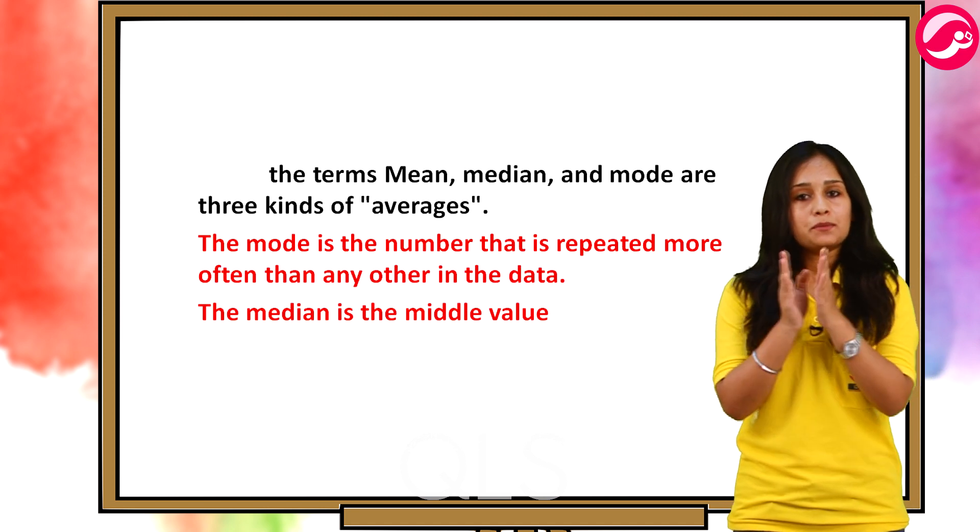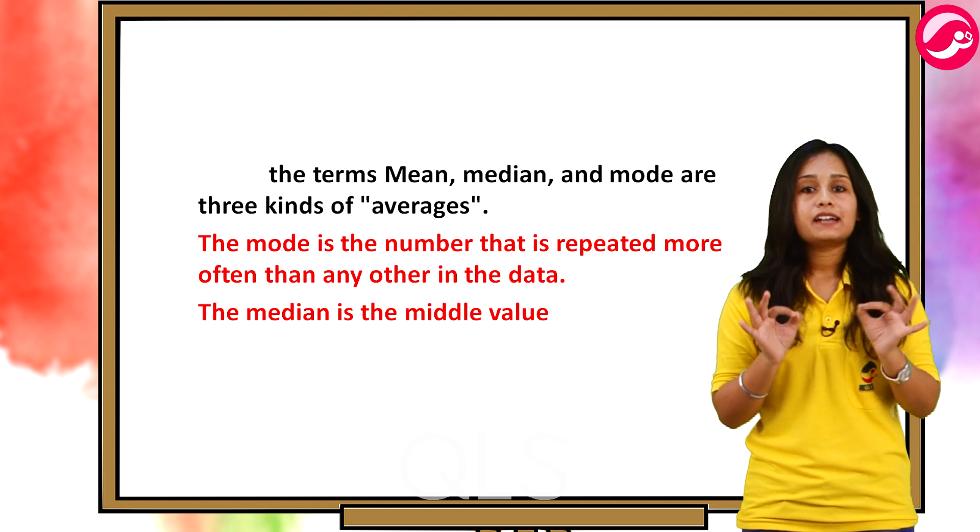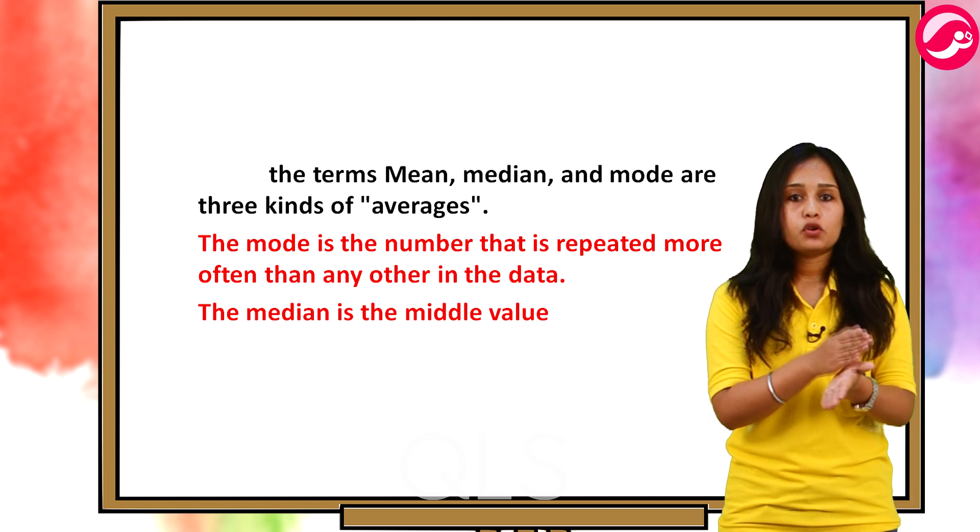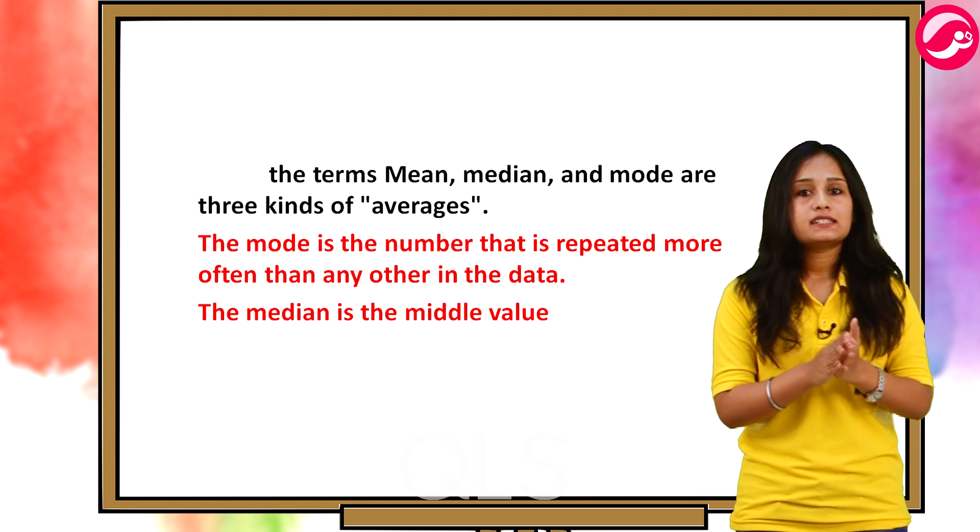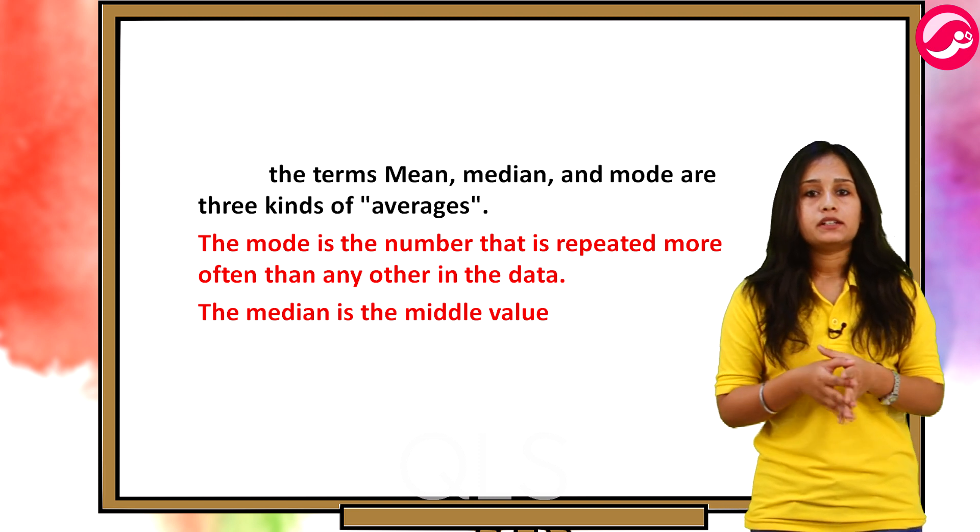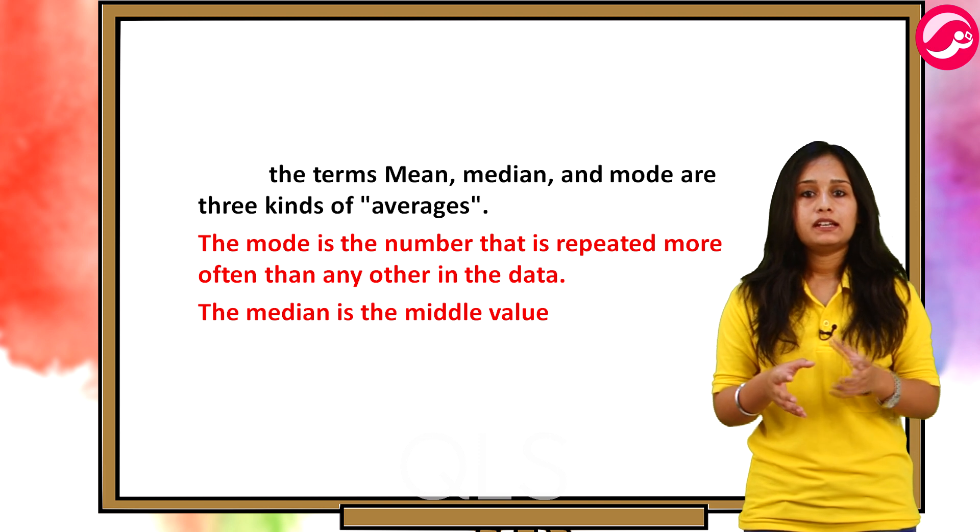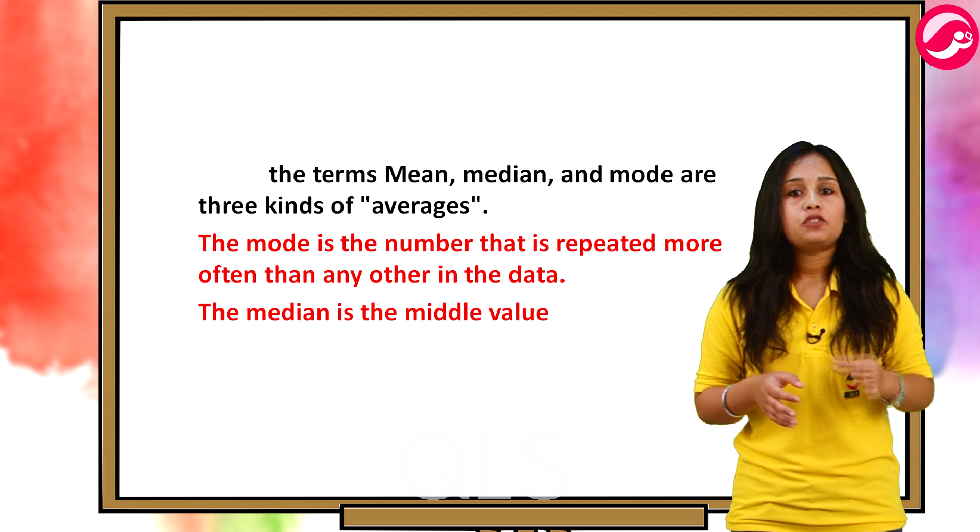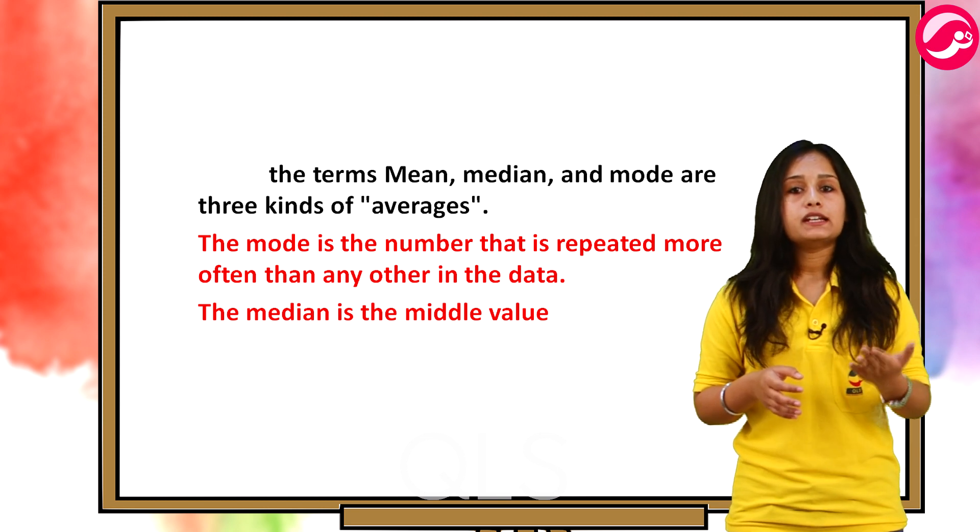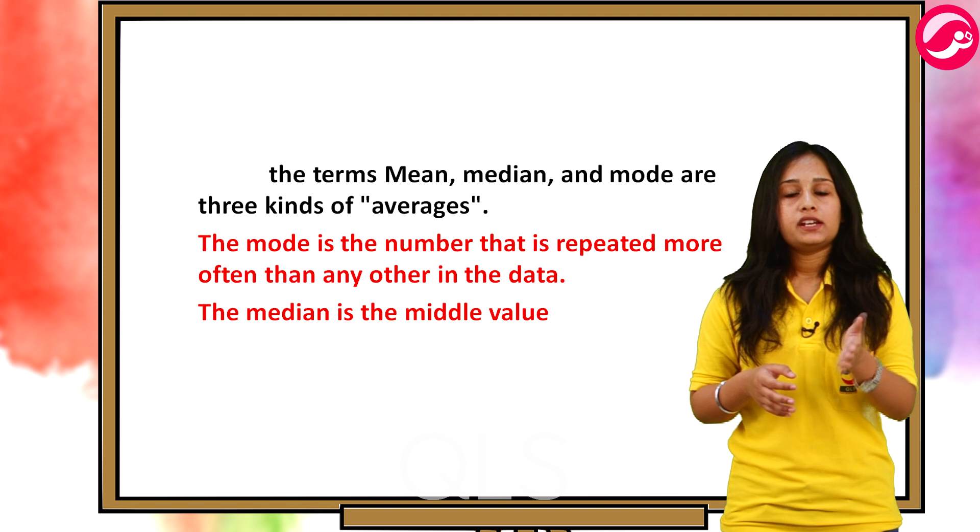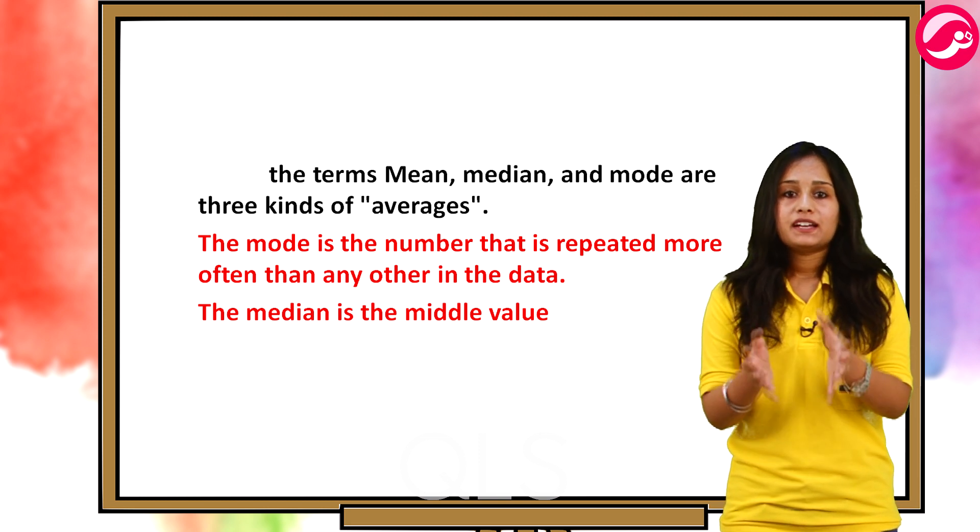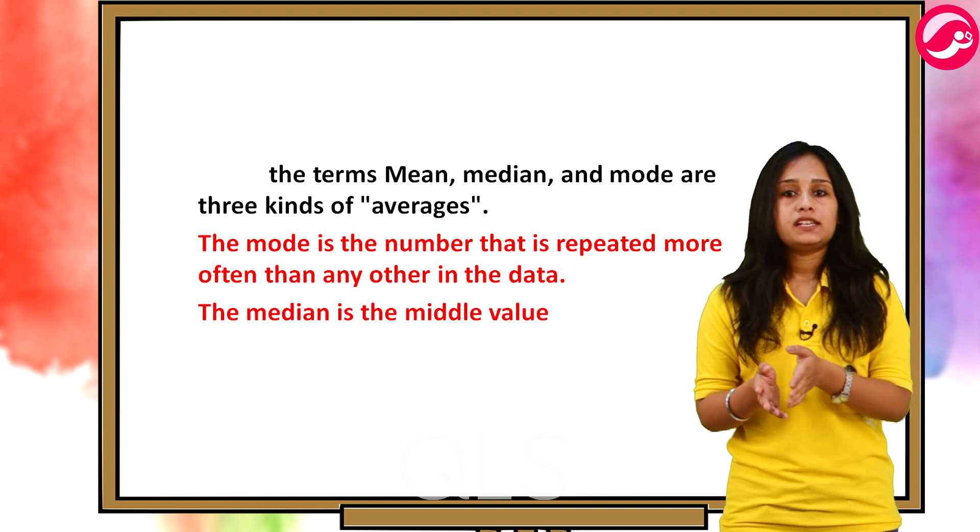Now, the terms mean, median and mode are three kinds of averages. The mode is the number that is repeated more often than any other in the data. The median is the middle value. To find the median, your numbers have to be listed in ascending order that is from smallest to largest. So, you may have to rewrite your list before you can find the median. Median is basically the middle value in case of odd number of data values arranged in ascending order and the average of the two middle values in case of even number of data items arranged in ascending order.